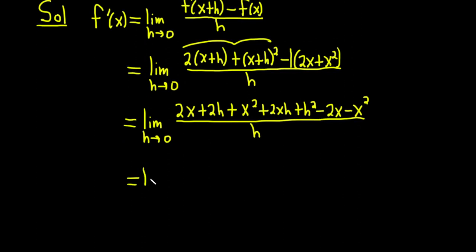This is equal to the limit as h approaches 0. And now we should get some cancellation. 2x is going to cancel with this 2x over here. This is not going to cancel. The x squared cancels. And that's about it. So we have 2h plus 2xh plus h squared. And that's all being divided by h.